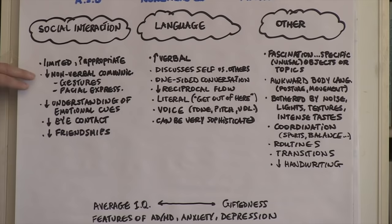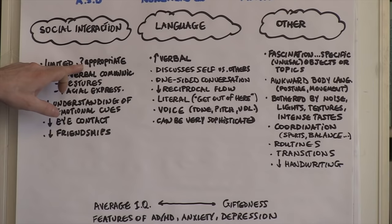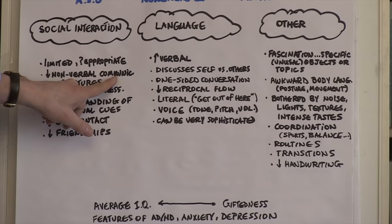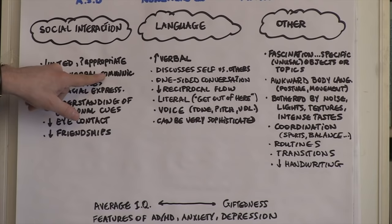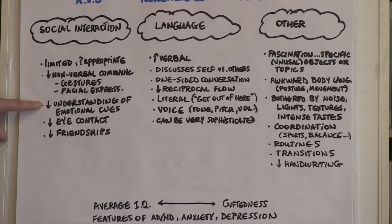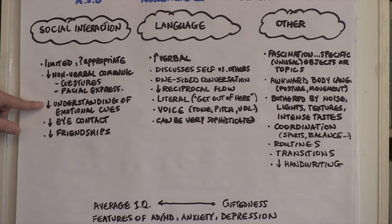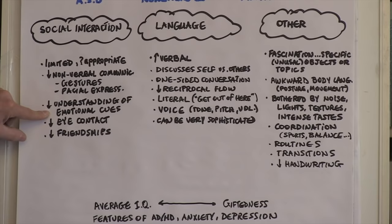In the social interaction domain, individuals with Asperger's syndrome tend to have limited and sometimes inappropriate kinds of behaviors. They have difficulties with nonverbal communication — for example, they have a hard time reading gestures or facial expressions, and sometimes their own gestures and facial expressions don't communicate what they're thinking and feeling. They often have difficulties understanding emotional cues, so they miscue when listening to or watching somebody, and may say something inappropriate or repeat something that isn't suited to the situation.